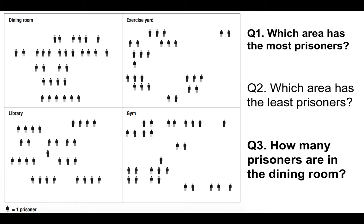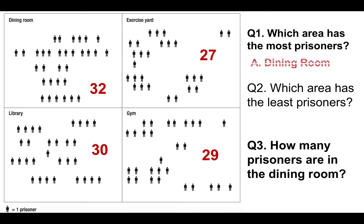It is quite monotonous because you have to sit there and add them up, but you can get them wrong. There are 32 in the dining room, 27 in the exercise yard, 30 in the library, and 29 in the gym. So which area has the most prisoners? It's the dining room. Which area has the least? The exercise yard with 27. And how many prisoners are in the dining room? 32.